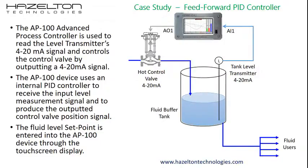This case study shall analyze a fluid buffer tank level P&ID control scenario and how to implement a feedforward P&ID control scheme to improve its performance.